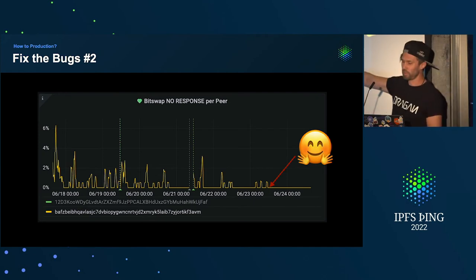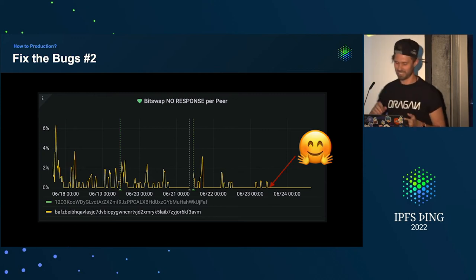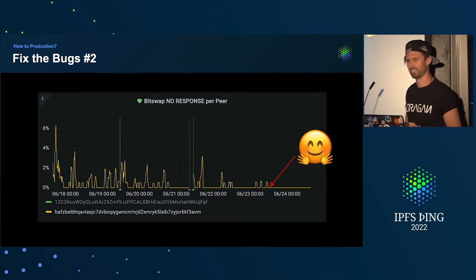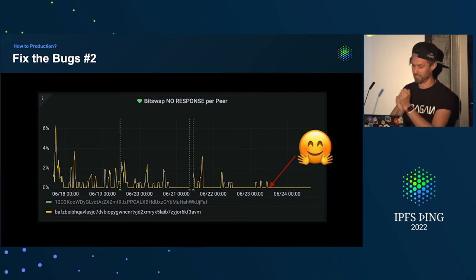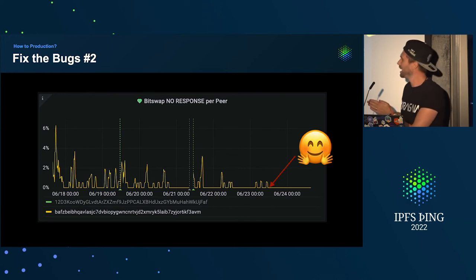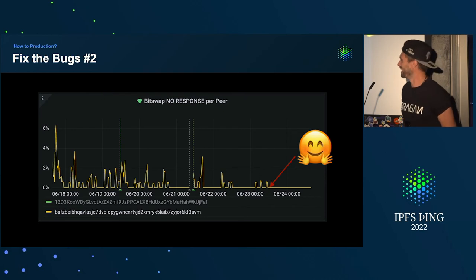So we fixed that. The internet said that in Node 17 this race condition had been fixed. We took a punt on that and upgraded to Node 18 — the next long-term support version — in our bitswap peers. And it fixed it. Can't believe it worked, but it did, and I was so happy.